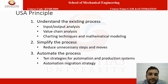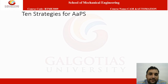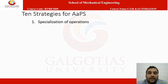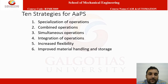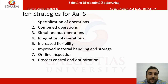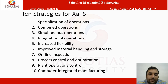The 10 strategies for automated production systems are: specialization of operations, combined operations, simultaneous operations, integration of operations, increased flexibility, improved material handling and storage, online inspection, process control and optimization, plant operation control, and computer integrated manufacturing.